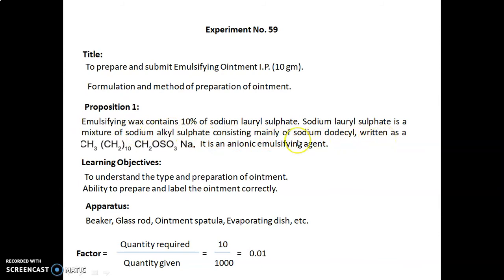Sodium lauryl sulfate is a mixture of sodium alkyl sulfate consisting mainly of sodium dodecyl, written as CH₃(CH₂)₁₀CH₂OSO₃Na. It is an anionic emulsifying agent which contains negative charge. Learning objectives are to understand the type and preparation of ointment and the ability to prepare and label the ointment correctly.